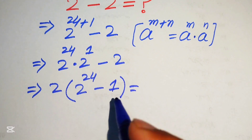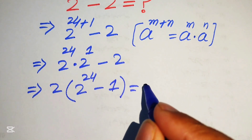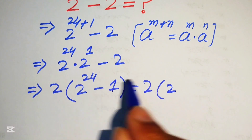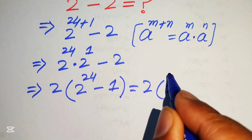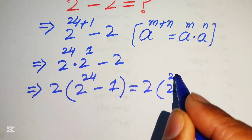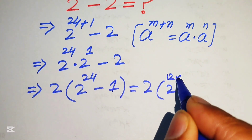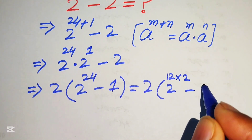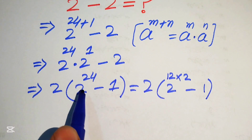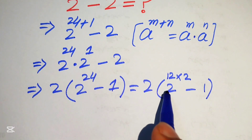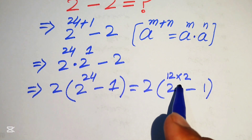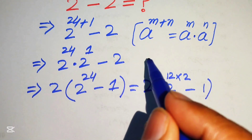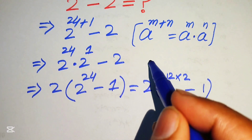After this step we focus on the exponent 24, and we write 24 as 12 times 2, giving us 2 to the power of 12 multiplied by 2, minus 1.